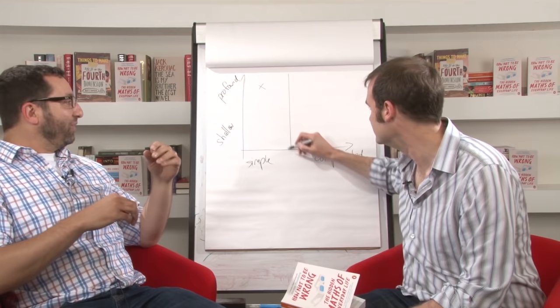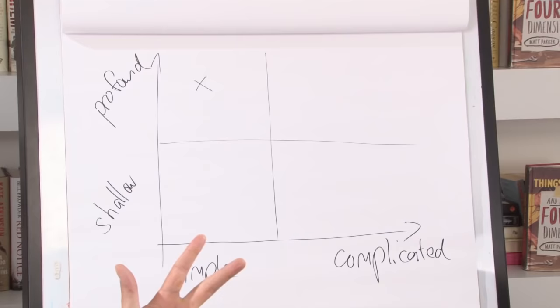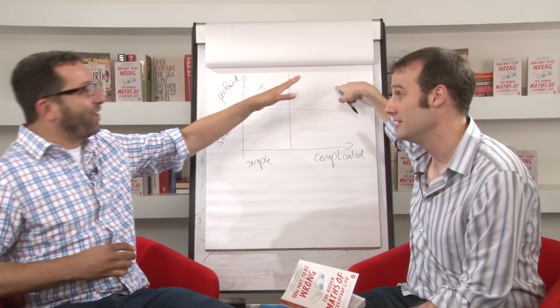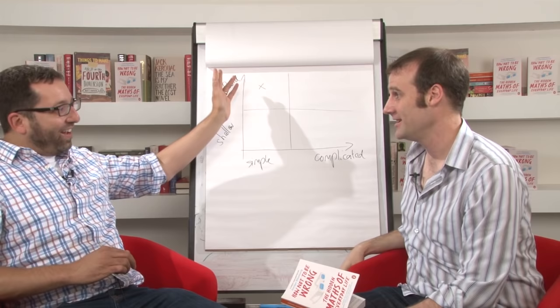In fact, I think all four quadrants of this diagram are populated. There's stuff in all four. The stuff that I actually do for a living is up here. It's very complicated and hopefully at least semi-profound. You did stuff on the generalized Fermat?